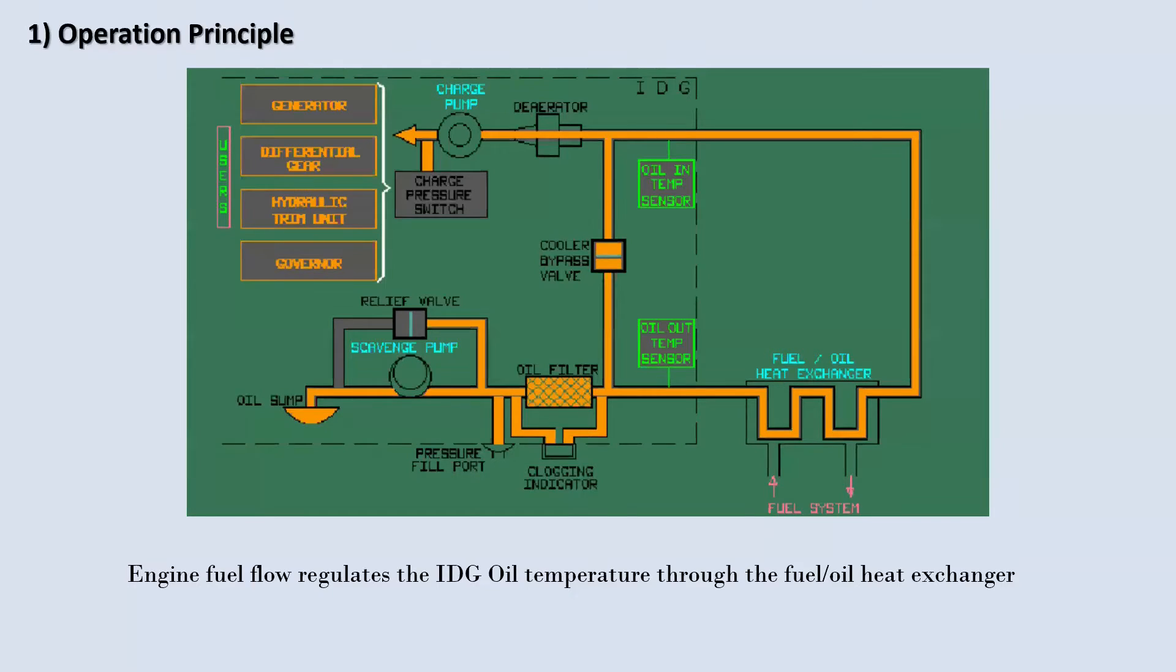Now onto the charge pump. Imagine it as a traffic controller for oil. Its role is to make sure there's a steady flow of oil at just the right pressure to all the different parts that need it. Picture it as regulating traffic on a busy road, ensuring everyone gets to their destination smoothly and without any hiccups. In simpler terms, the scavenge pump cleans and cools the oil while the charge pump ensures it's delivered where it's needed when it's needed.